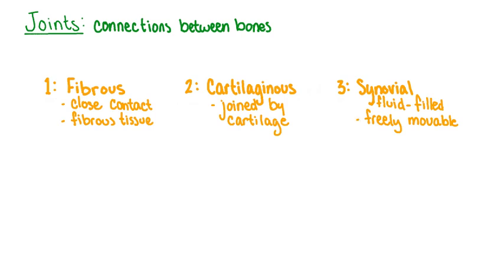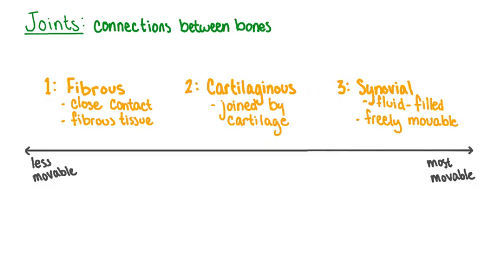Synovial joints are freely moving joints, cushioned and lubricated by a special fluid called synovial fluid. Fibrous joints tend to be immovable, and cartilaginous joints can be immovable or slightly movable. Synovial joints are adapted to allow a wide range of motions and are the most common type of joint found in the highly articulated, movable appendicular skeleton.